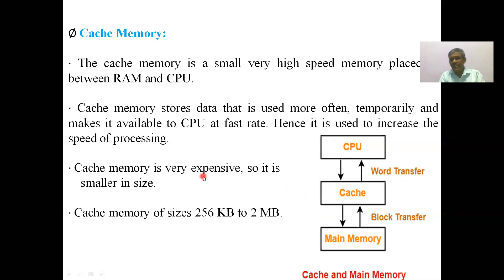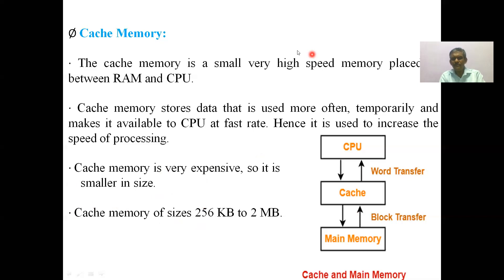Cache memory is very expensive even though the size is small. The storage capacity of cache memory varies from 256 KB to 2 MB. This is all about cache memory.